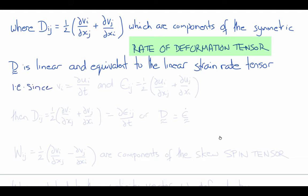In other words, since vi is del ui del t, then epsilon ij, the Cauchy strain tensor is one-half del ui del xj plus del uj del xi. Then that means that dij is one-half of del vi del xj plus del vj del xj.